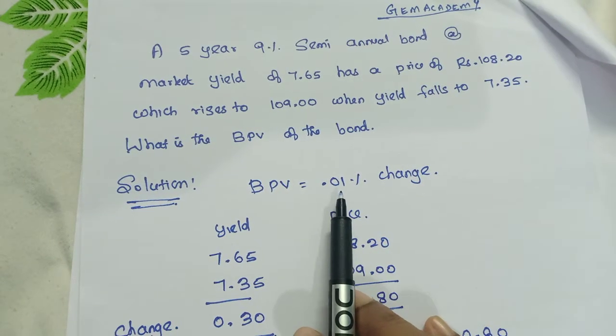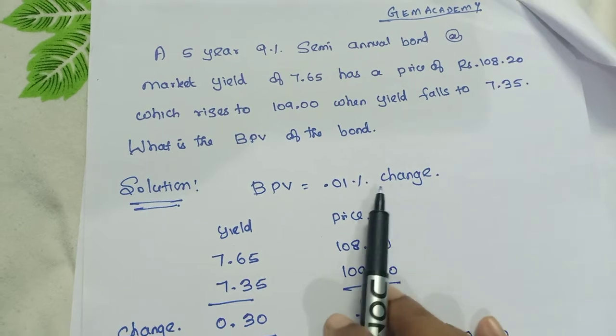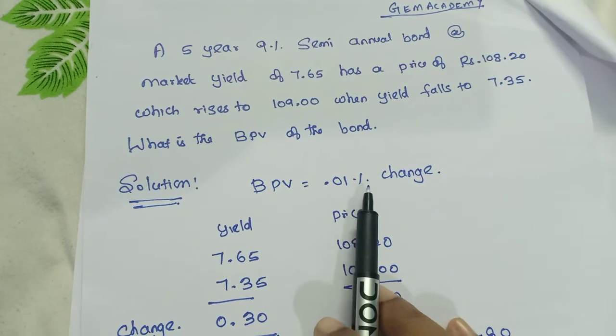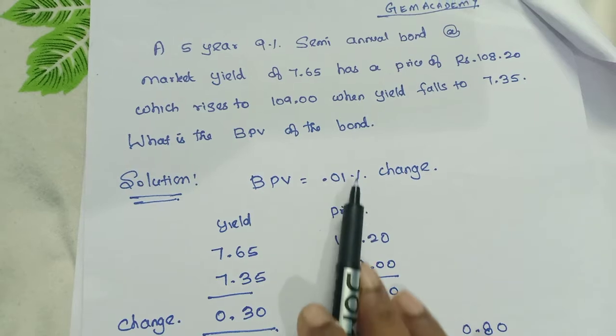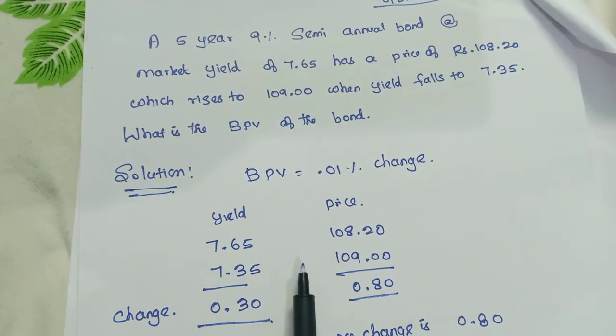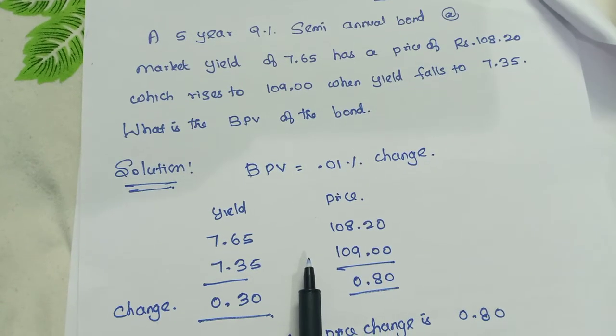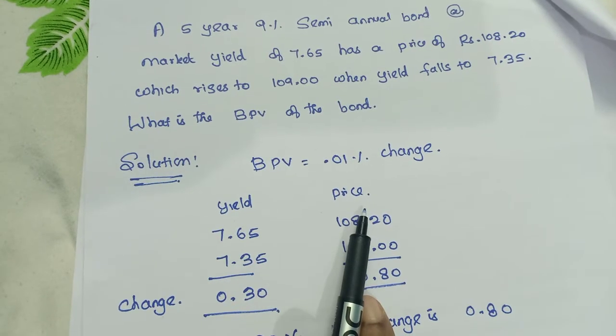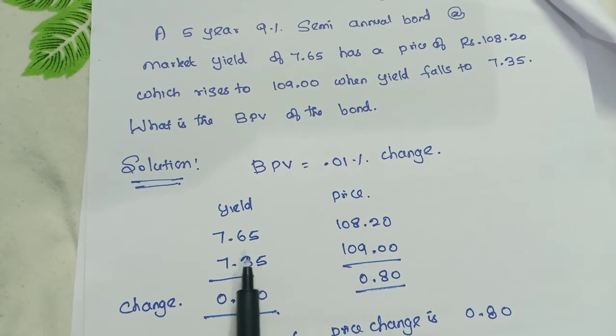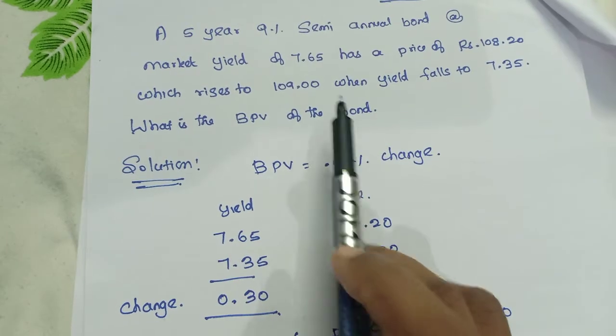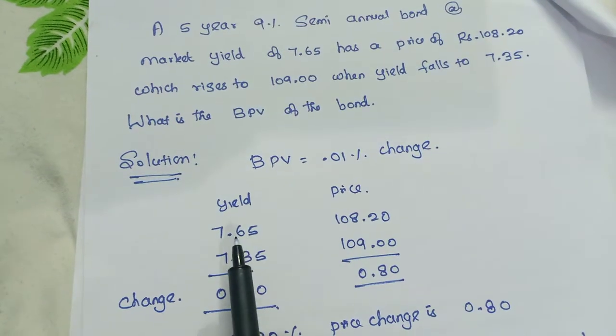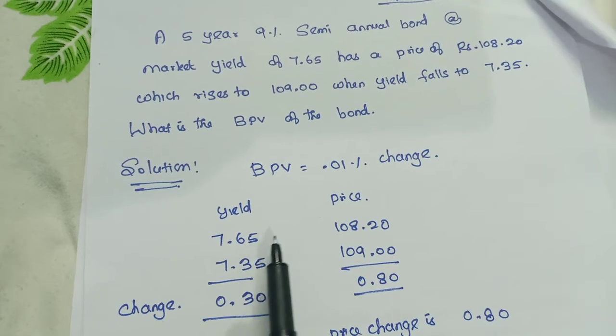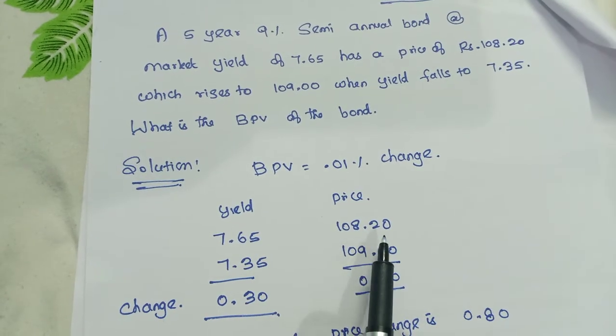Basis Point Value is nothing but 0.01 percentage change. That is, change for 0.01 percentage. How to find BPV we are going to see now. Here yield is given and here price - for 7.65 percentage it's given.